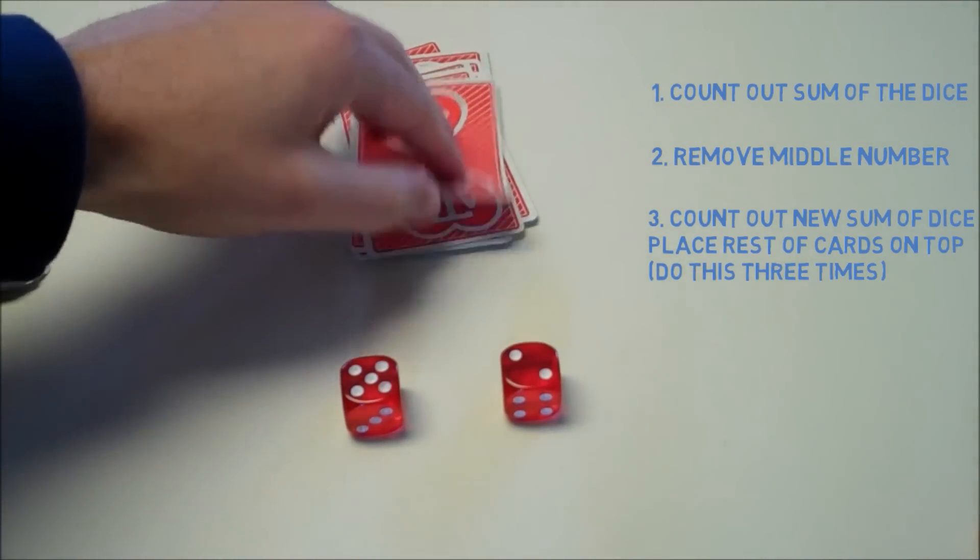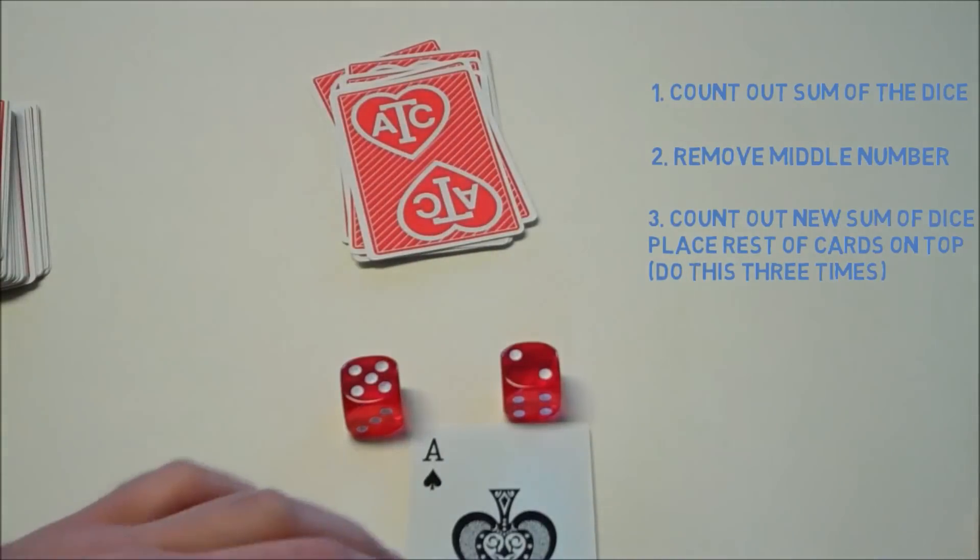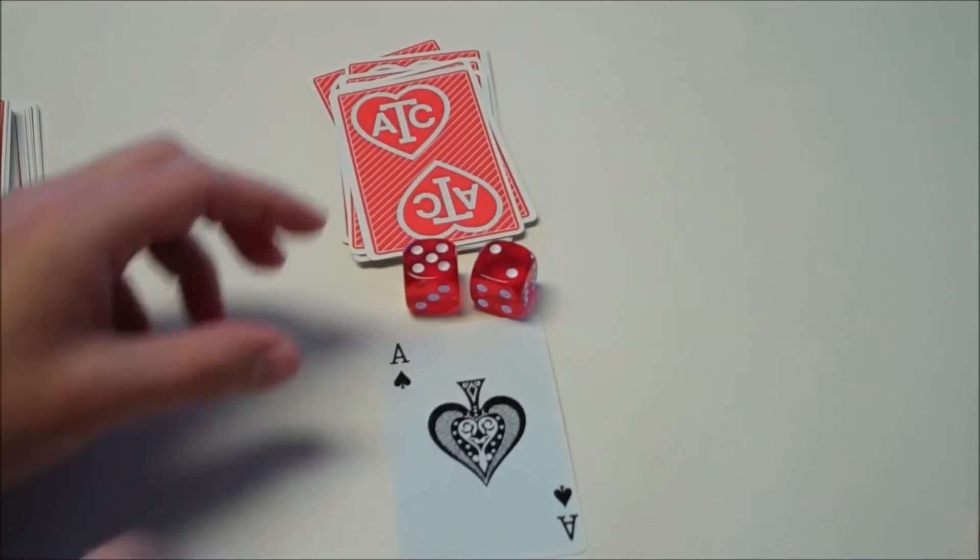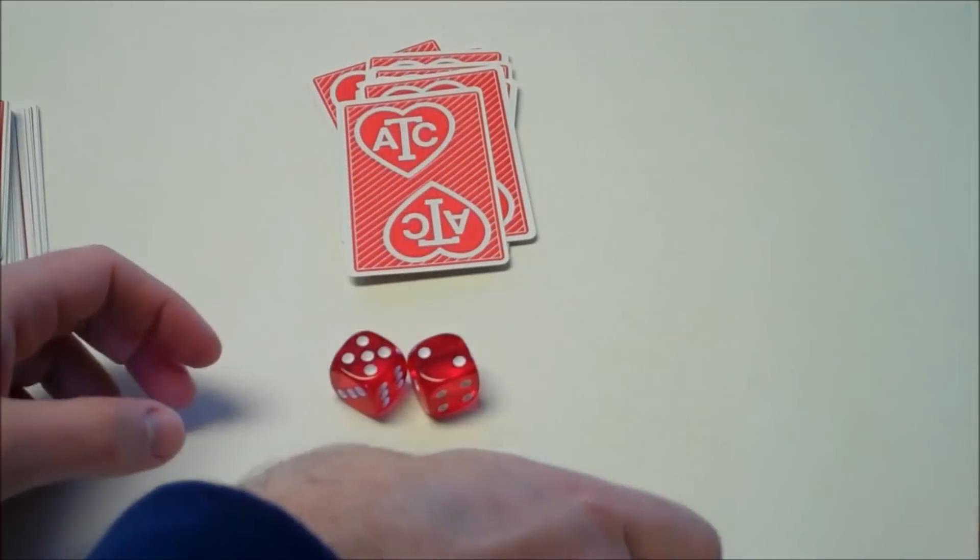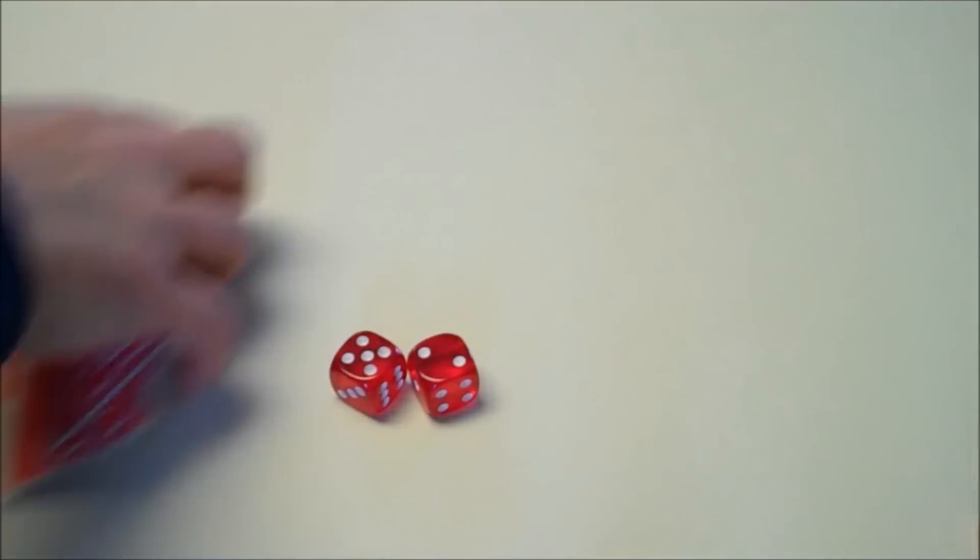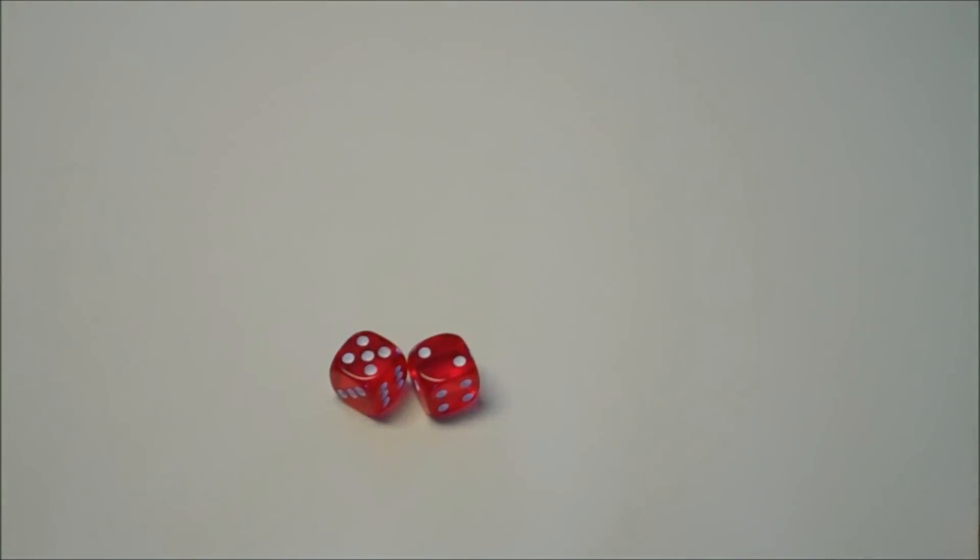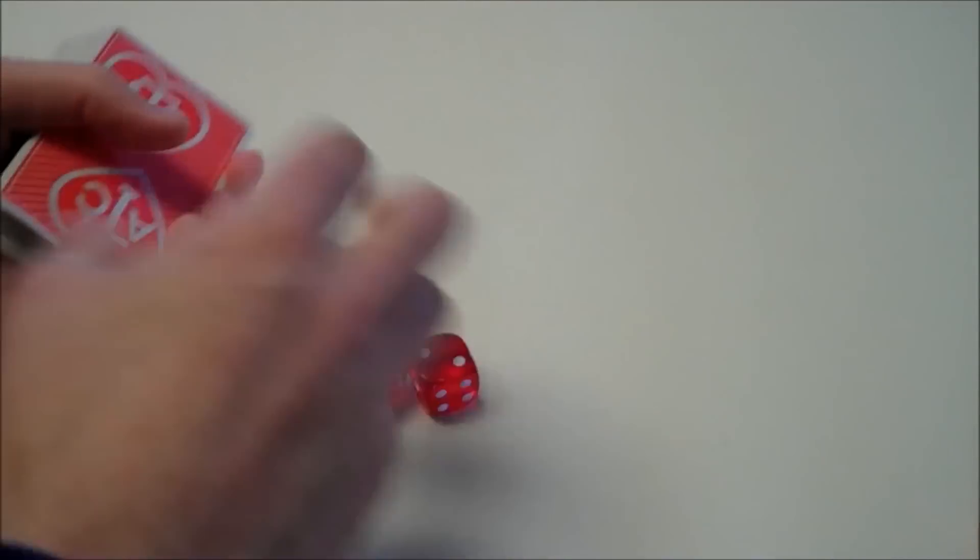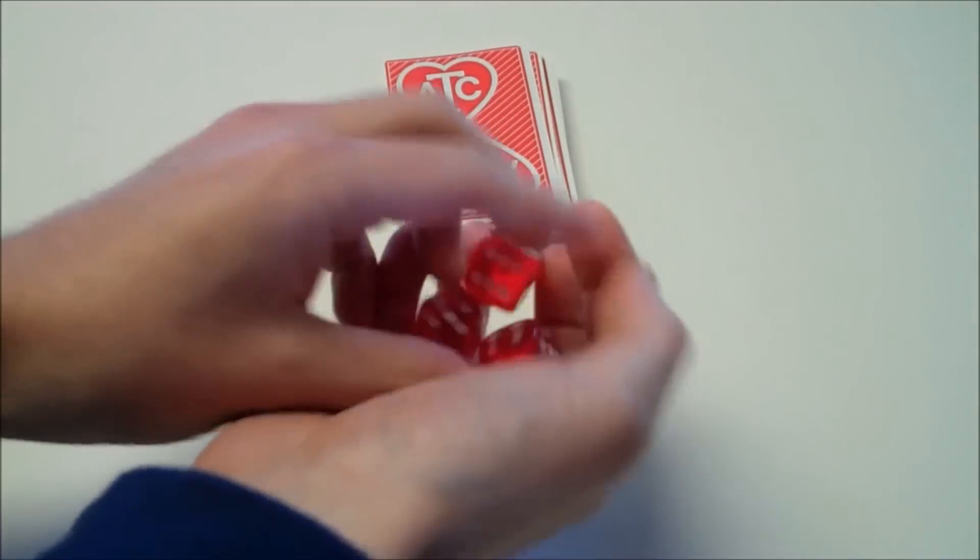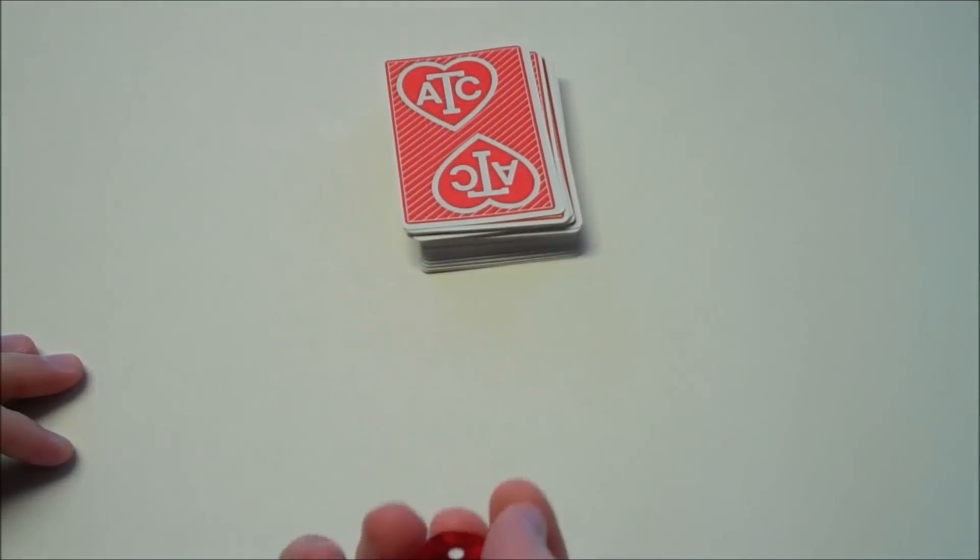Now we've gone through a long process, but you're going to be able to predict the card. You're going to tell the spectator, I know this is the ace of spades. So it's a pretty cool trick because there's no way you could have known what they were going to roll. There's no way you could have known what the middle number was. But still you were able to figure out what the card was on top of the pile.